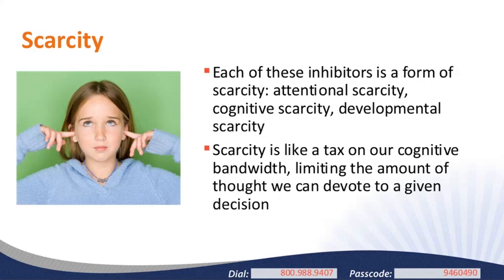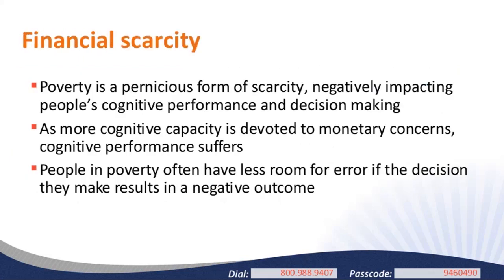Poverty, which we'll spend much of the rest of the webinar talking about, is a particularly pernicious form of scarcity, negatively impacting people's cognitive performance and decision-making. When people have to devote a greater portion of their cognitive capacity to worrying about making ends meet on a daily basis, research shows that cognitive performance suffers. I want to make a very important distinction: I'm not saying people in poverty have any less cognitive ability or intelligence than more affluent people. Rather, whatever cognitive capacity each of us has, anxieties about making ends meet financially take up a substantial portion of our cognitive bandwidth, using up mental energy and attention that we then can't devote to other tasks.